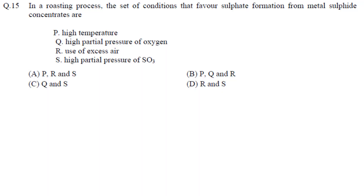We have the GATE 2013 solution for extractive metallurgy. The first question is: in a roasting process, what set of conditions favors sulfate formation from metal sulfide concentrates? Sulfates are like SO4 — for example, FeSO4. The options are: high temperature, high partial pressure of oxygen, use of excess air, or high partial pressure of SO3.